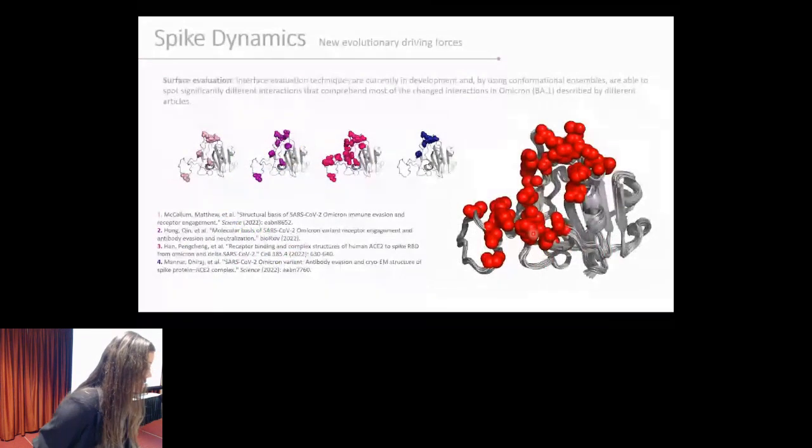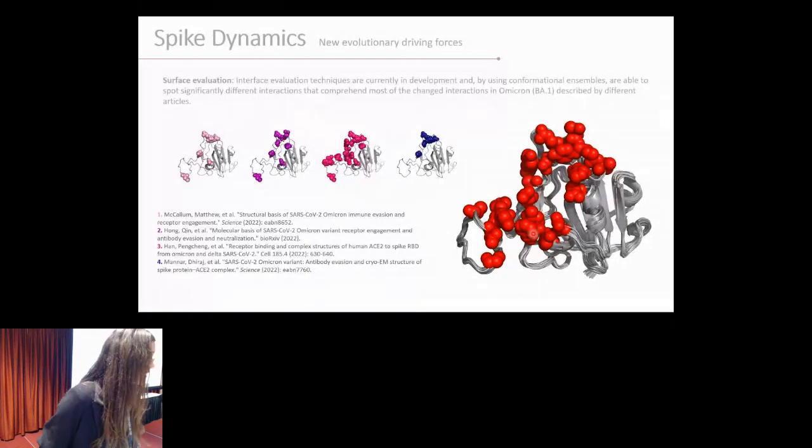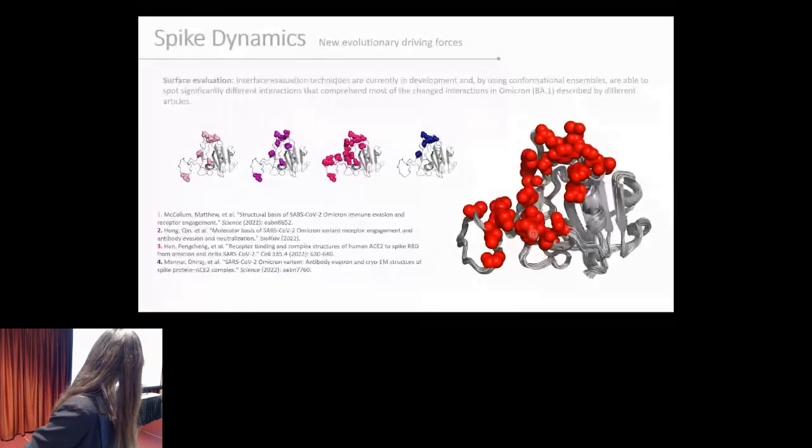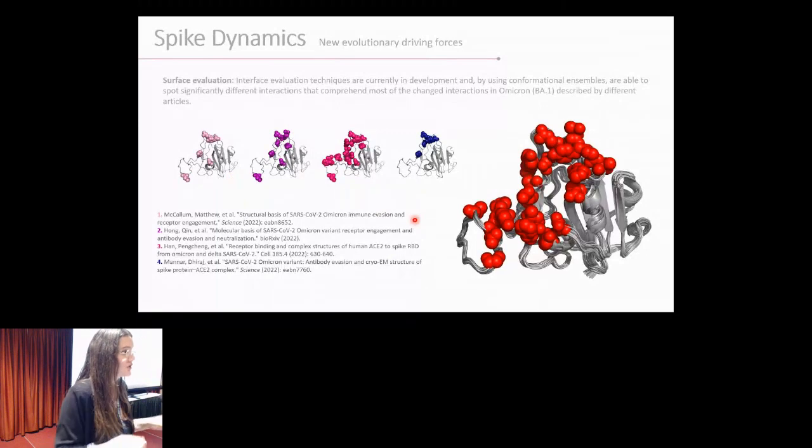Because we do have the conformational ensembles tool, we could maybe evaluate this interface or these interactions considering a larger range of structures to model new variants or a set of mutations and try to predict these effects on binding. For now, we are still with preliminary results, but here I have the feeling that it will work because here we have the conformational ensembles for the BA.1, which was called Omicron back then. These are the residues that are having changes in interactions according to different references. We were able to capture all those differences in interactions when we did these interactions for a distribution of 32 conformations. We compared this distribution to see which interactions were significantly different to the distribution of the wild type. And we were able to capture all the interactions that they were seeing in those different articles.